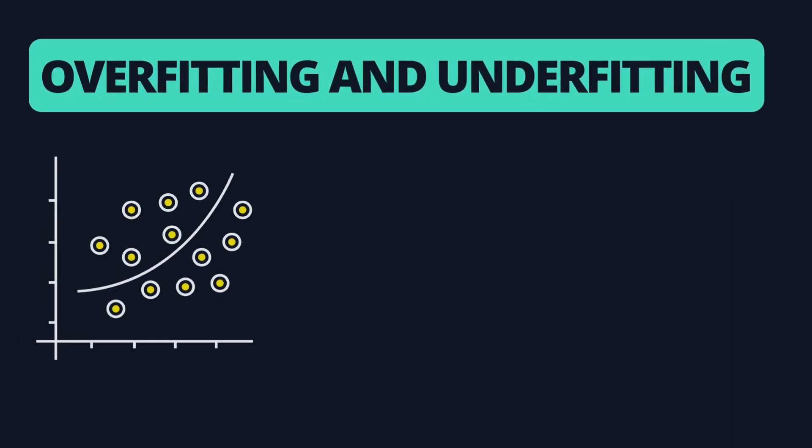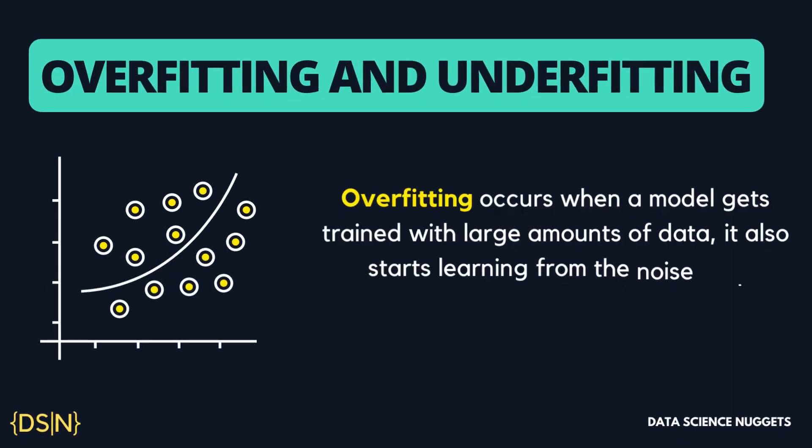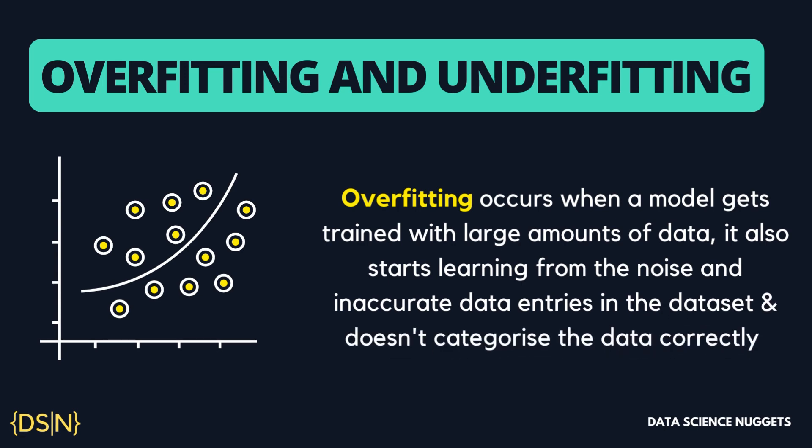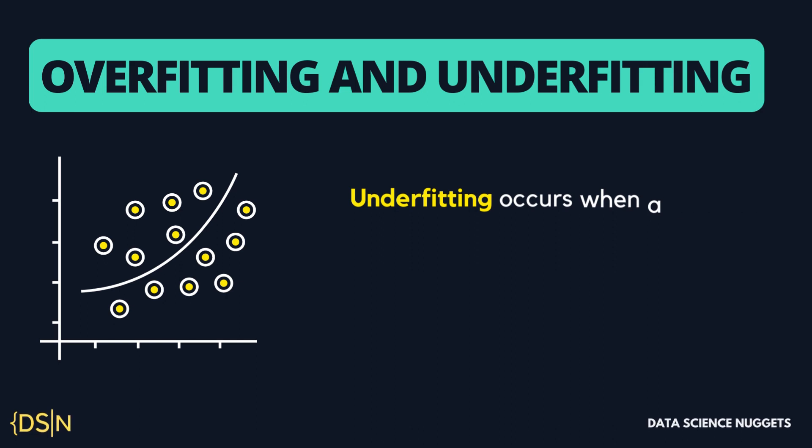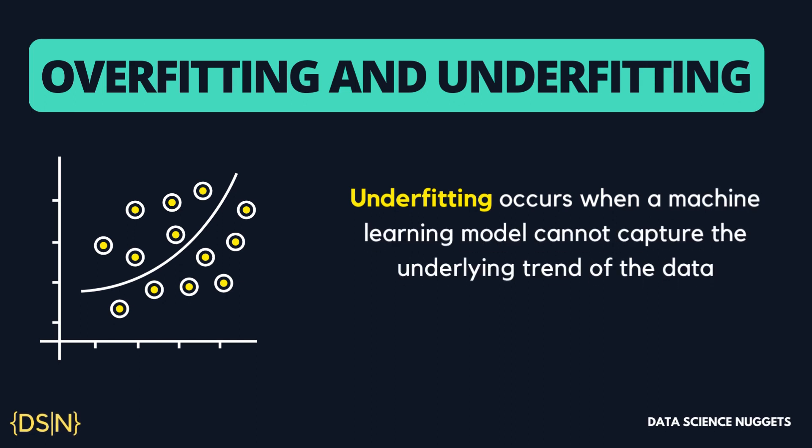Next is overfitting and underfitting. When a model is trained with a large amount of data, it also starts learning from the noise and inaccurate data entries in the dataset. Consequently, the model does not categorize the data correctly because of too many details and noise — this is referred to as overfitting. Similarly, when a machine learning model cannot capture the underlying traits of the data, underfitting occurs. Underfitting is commonly observed when there is less data to build an accurate model, or when a linear model is built with non-linear data, creating a model with high bias that may not be flexible enough for predicting outcomes.